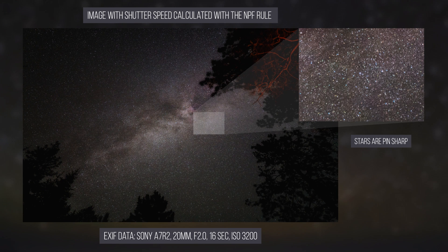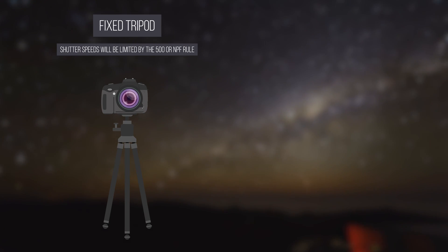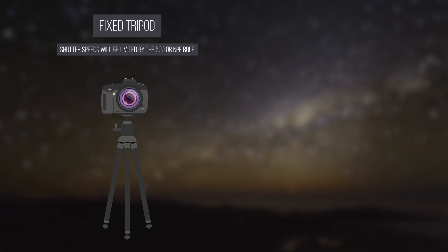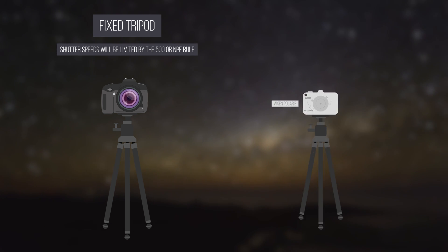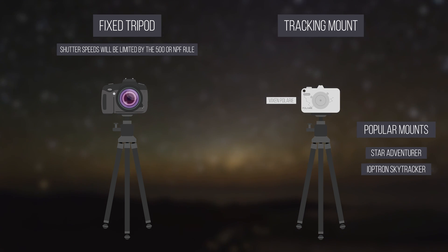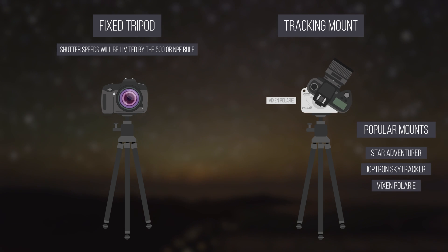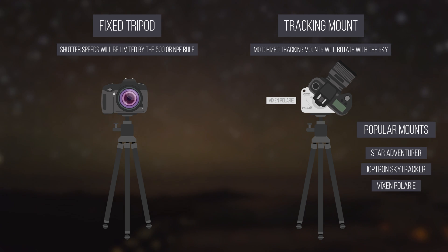Now, both the NPF and 500 rules involve a camera on a stationary tripod, but you can extend your shutter speed dramatically with other devices. Motorized tracking mounts such as the Star Adventurer, iOptron SkyTracker, and the Vixen Polari rotate the camera at the same rate the Earth rotates, cancelling out the star trailing effect.